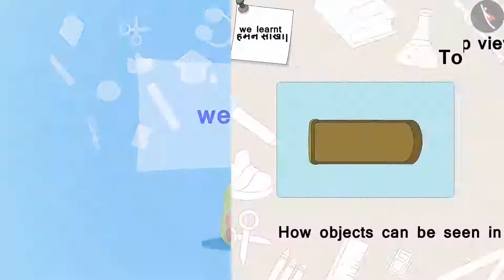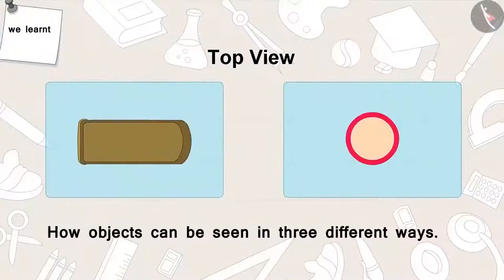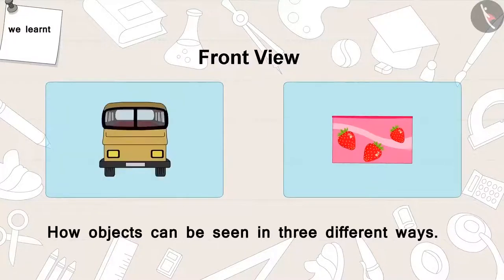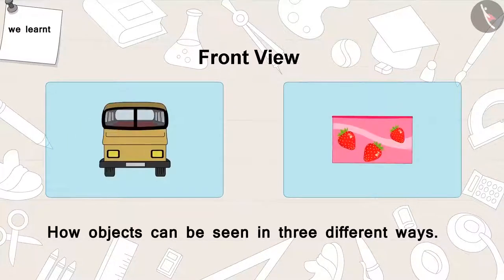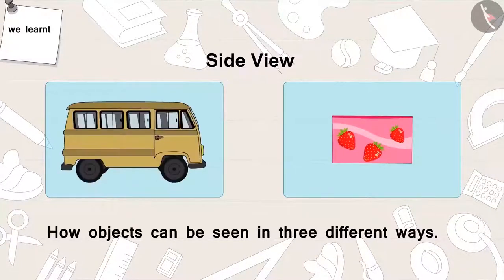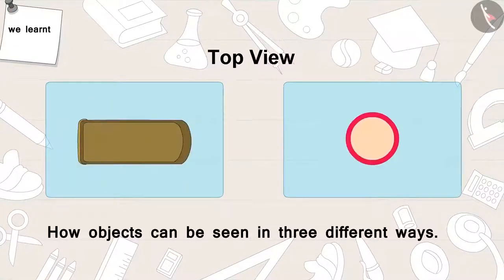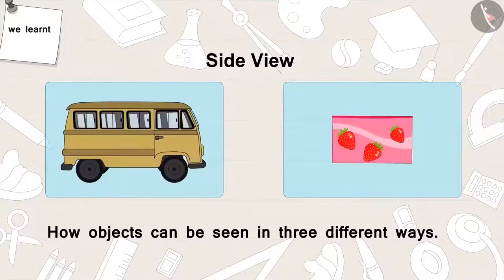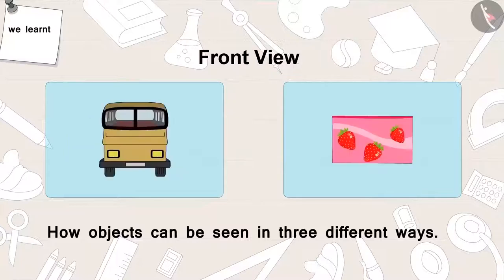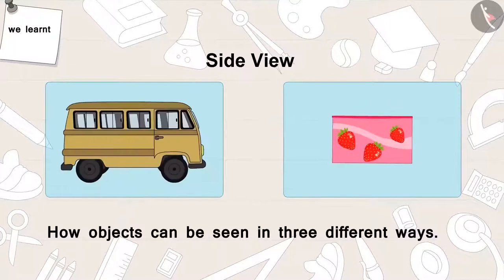Babban kept scratching his head, thinking about how Raju and Bablu had managed to fool him. In this part we learnt how objects can be seen in three different ways: from above — top view; from front — front view; and from the side — side view. In the next video, we will learn more about this with the help of some interesting examples.